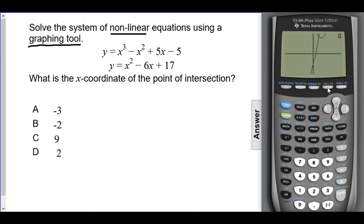I'm going to hit second, trace, to bring me to the calculate menu. If you see 5, it says intersect. So you can scroll down to 5 and hit enter, or just hit the 5 number.